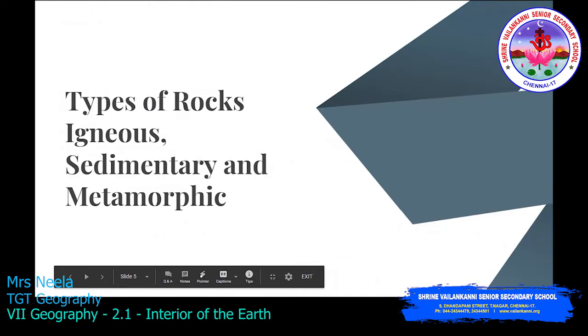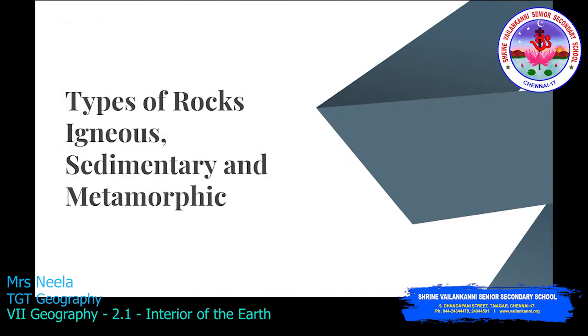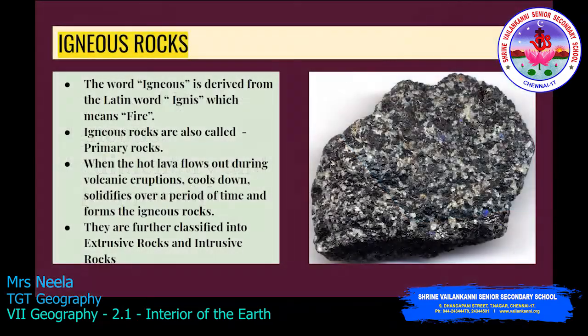There are three important types of rocks: igneous, sedimentary, and metamorphic rocks. The first one is igneous. The word igneous is derived from the Latin word 'ignis,' which means fire. These igneous rocks are also called primary rocks. When hot lava flows out during volcanic eruptions, it cools down and gets solidified over a period of time, forming igneous rocks.